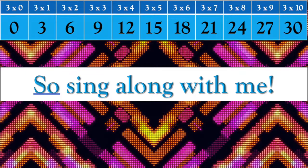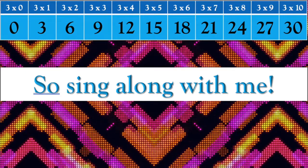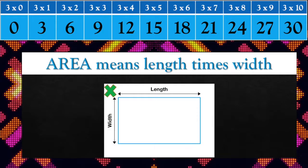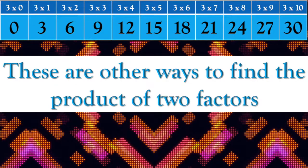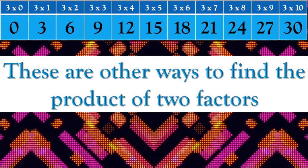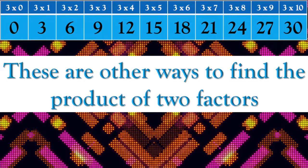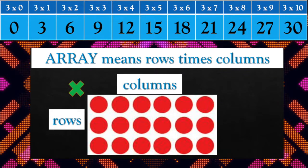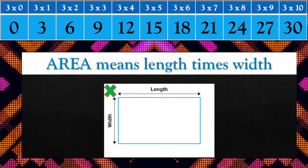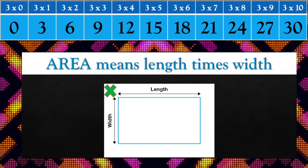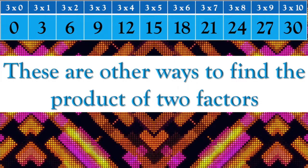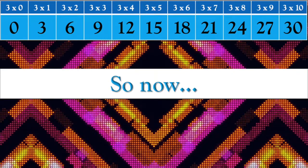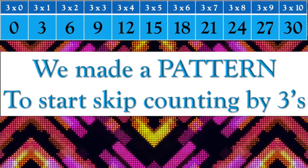So sing along with me. Area means rows times columns, area means length times width. These are other ways to find the product up to factors. Area means rows times columns, area means length times width. These are other ways to find the product, up to factors.